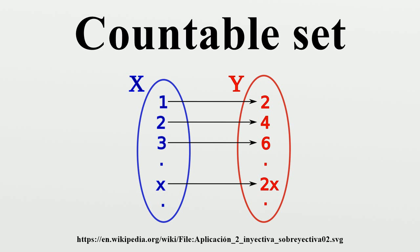To understand what this means, we first examine what it does not mean. For example, there are infinitely many odd integers, infinitely many even integers, and infinitely many integers overall. However, it turns out that the number of even integers, which is the same as the number of odd integers, is also the same as the number of integers overall. This is because we can arrange things such that for every integer, there is a distinct even integer.